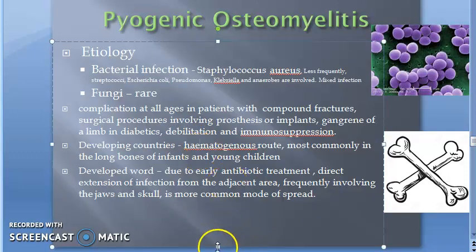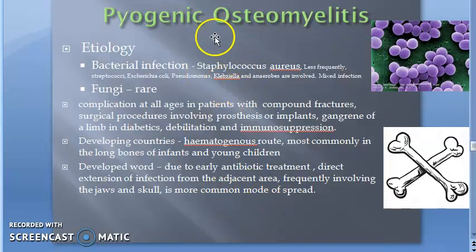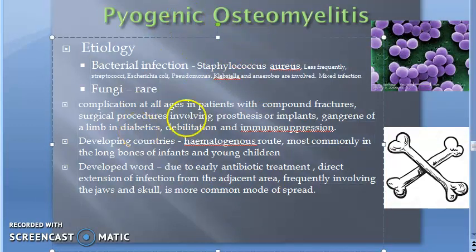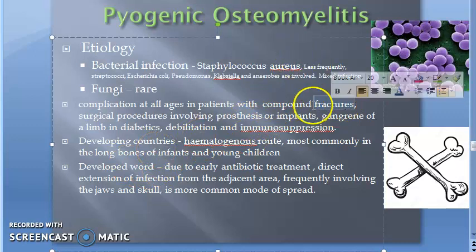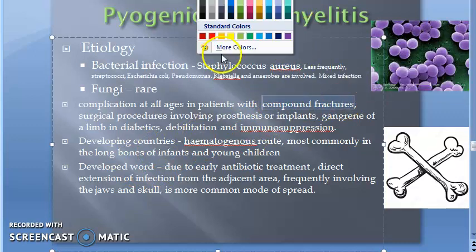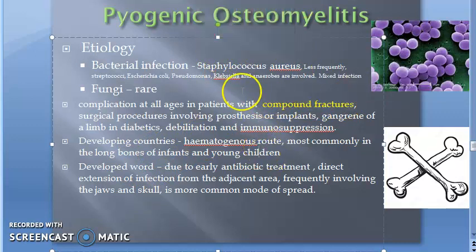If you have to give empirical therapy, you should always give it targeting Staph aureus. Fungi can also cause pyogenic osteomyelitis, but that's rare. Now, why exactly does osteomyelitis occur? When a person has a compound fracture, they are susceptible to pyogenic osteomyelitis.